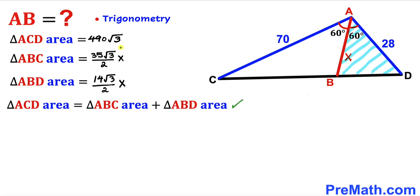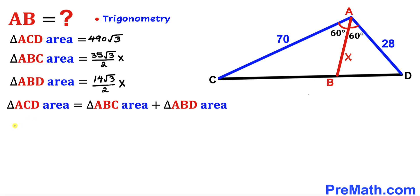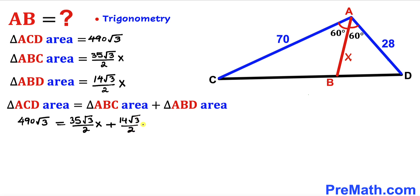Now let's fill in the blanks in our equation. Area(ACD) = Area(ABC) + Area(ABD) gives us: 490√3 = 35√3/2 × x + 14√3/2 × x.